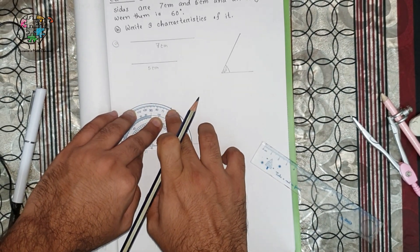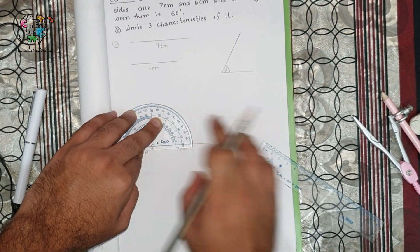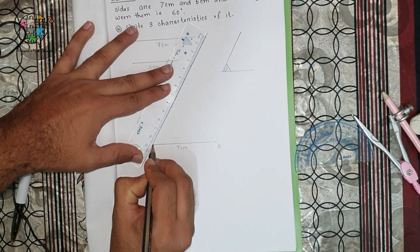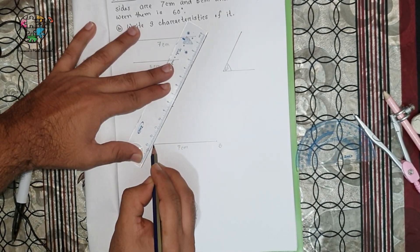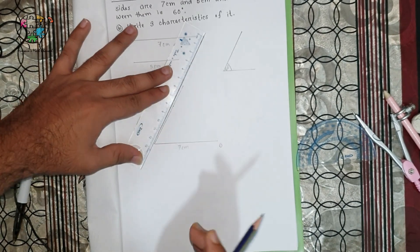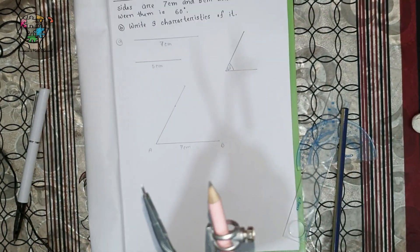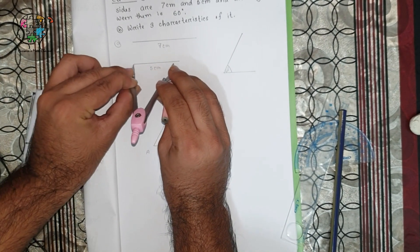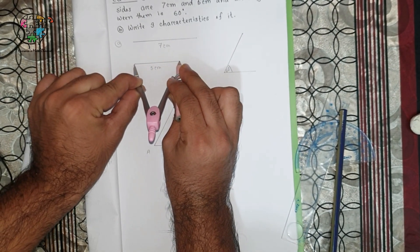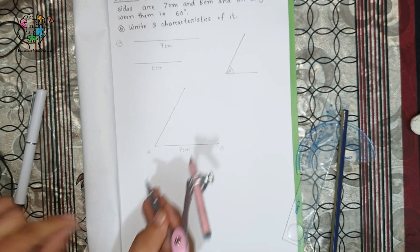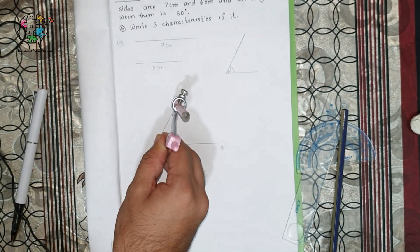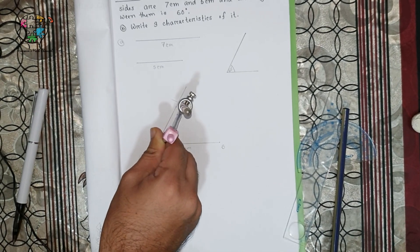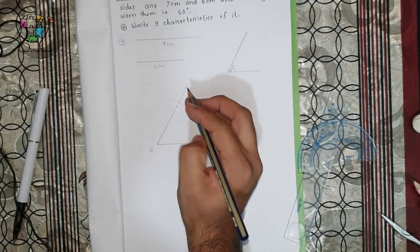At this 60-degree mark, point it, and with the help of the scale connect corner point A and this new point. Connect and extend. Now with the help of this compass, take a measurement of 5 centimeters, and from corner point A cut 5 centimeters from this line. Call this point C.